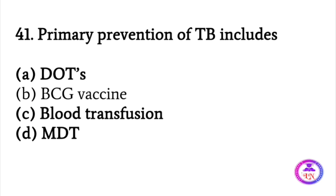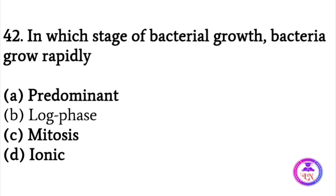Primary prevention of TB includes the BCG vaccine. In which stage of bacterial growth do bacteria grow rapidly? The answer is the log phase.